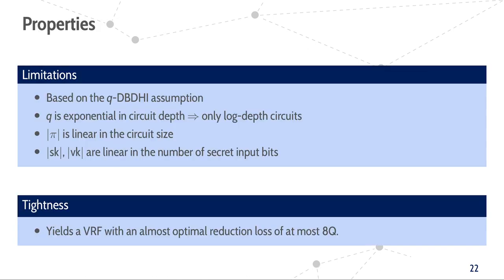Yamada's VRF is based on the Q-dBDHI assumption, where the Q is exponential in the circuit depth, meaning we may only use logarithmic depth circuits, and even then the assumption, albeit being non-interactive, is still relatively strong. However, proof and key sizes are modest, but certainly not as good as constructions designed for efficiency. Nonetheless, this construction allows us to achieve a loss that is at most 8Q and thus attain, up to a constant factor, optimally tight reduction.